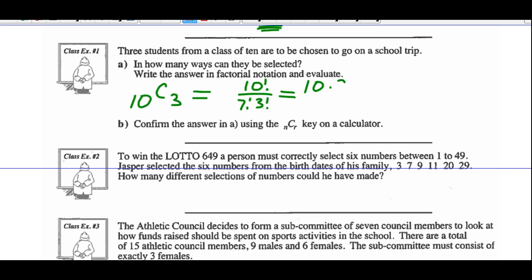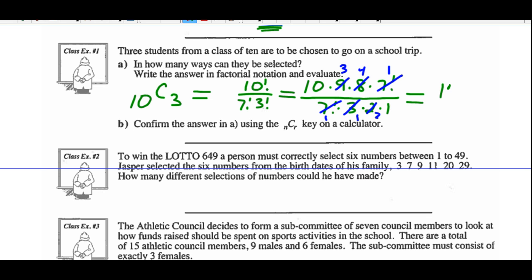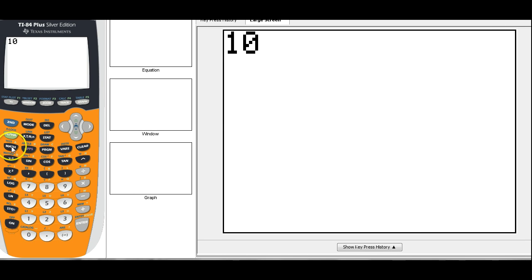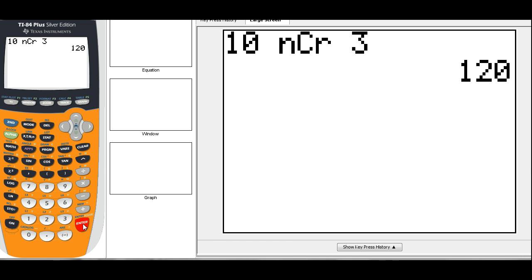We can write 10 factorial as 10 times 9 times 8 times 7 factorial, all over 7 factorial, and 3 factorial is 3 times 2 times 1. We can reduce: 7 factorial divided by 7 factorial is 1, 9 and 3 reduce to 3 and 1, 8 and 2 reduce to 4 and 1. So we find our solution: 10 times 3 times 4 is 120, divided by 1 is 120. Confirmed on the calculator: 10 nCr 3 equals 120.